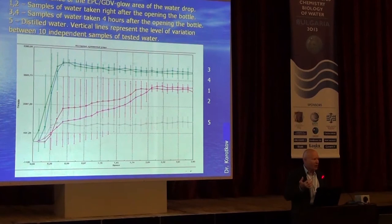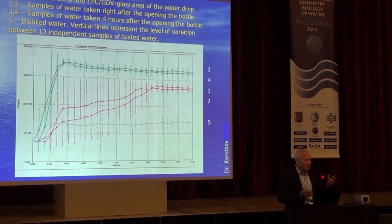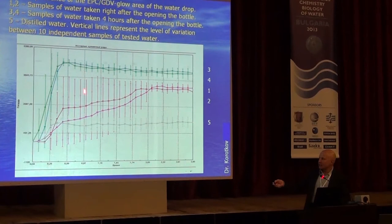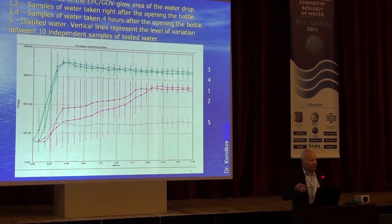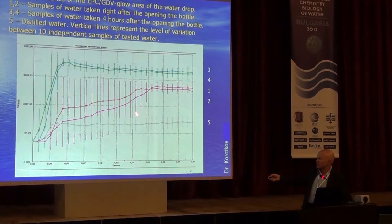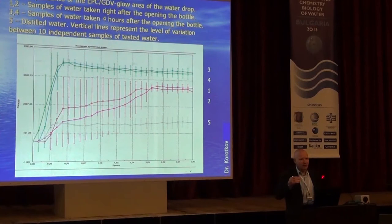I understand that for scientific rigor we need distilled water. But still, if you open a bottle of distilled water, you see very high variation of signal — both over time and from sample to sample. Typically we take five to ten samples and average the results with variation between samples. Then, after about four hours, we have quite a stable signal with different samples giving absolutely the same signal.